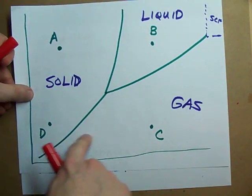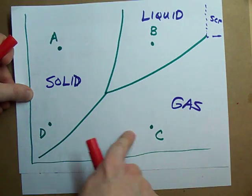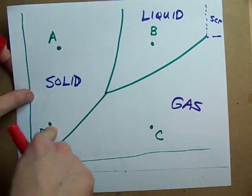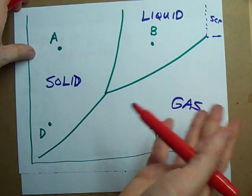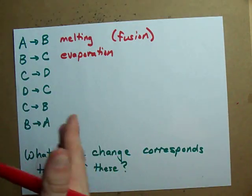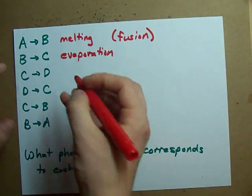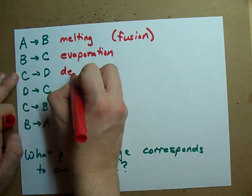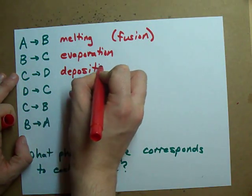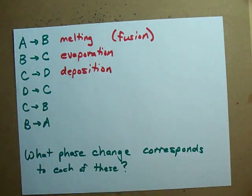Point C to D is a gas turning into a solid. When you have a gas and it just comes out as a solid with no liquid phase in between, it's called deposition. It's important in atmospheric chemistry and stuff.